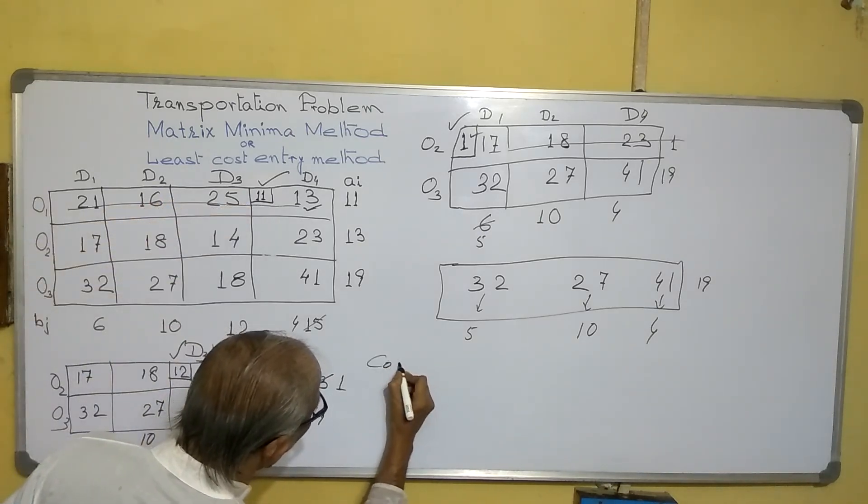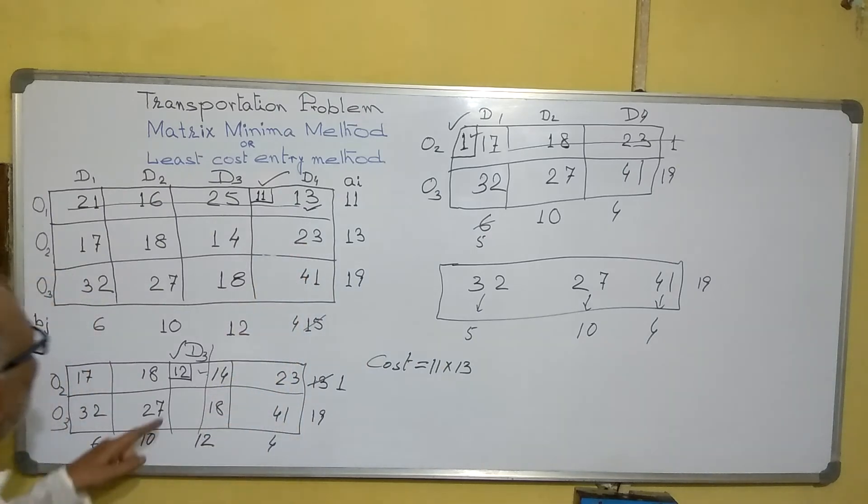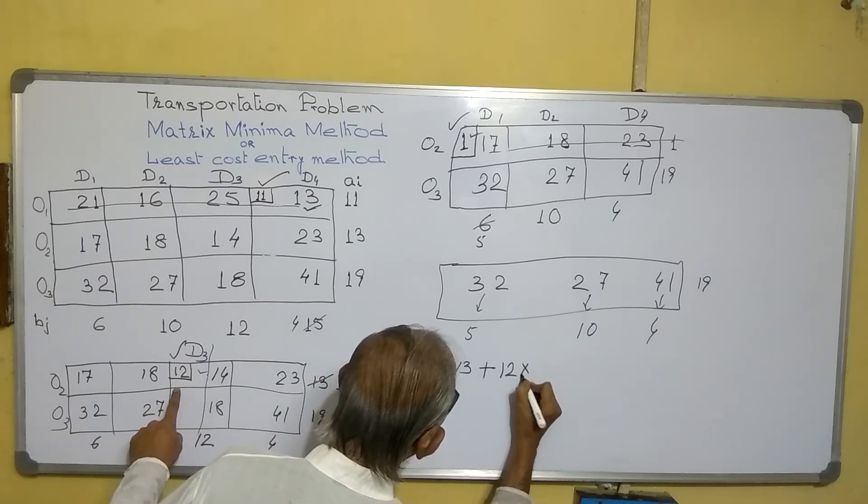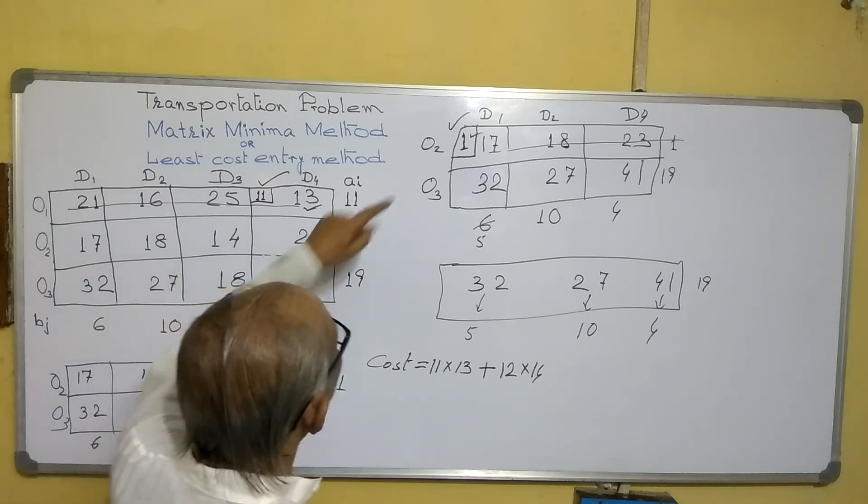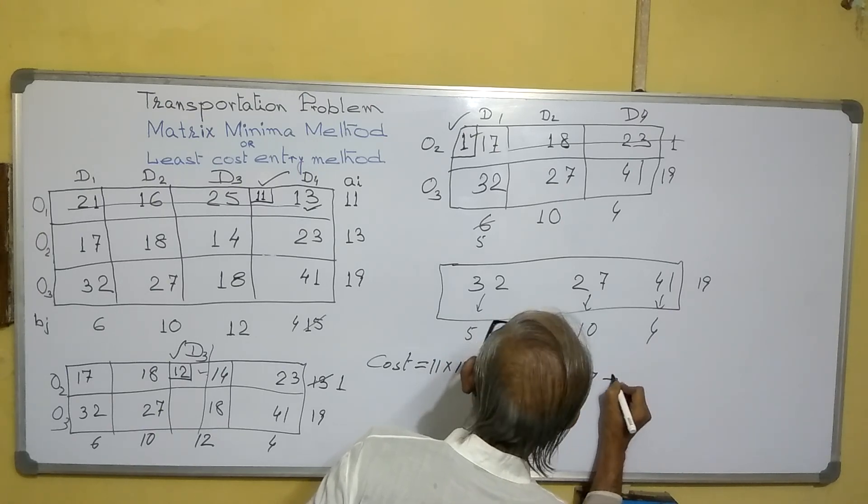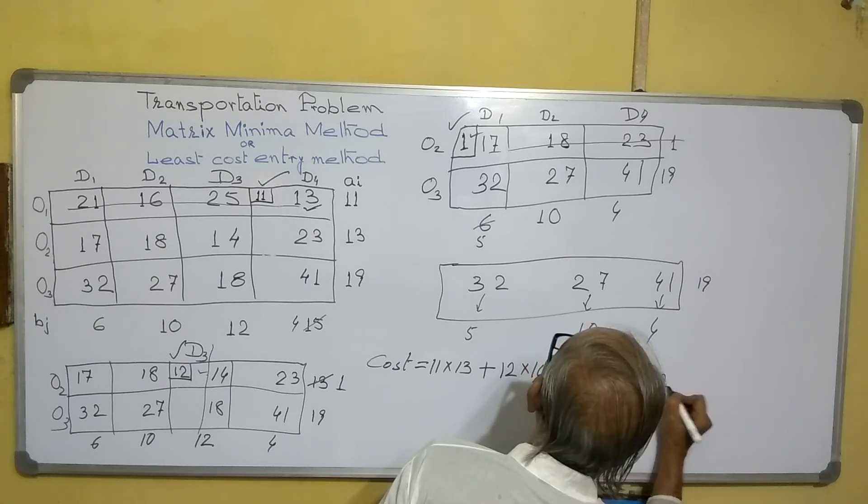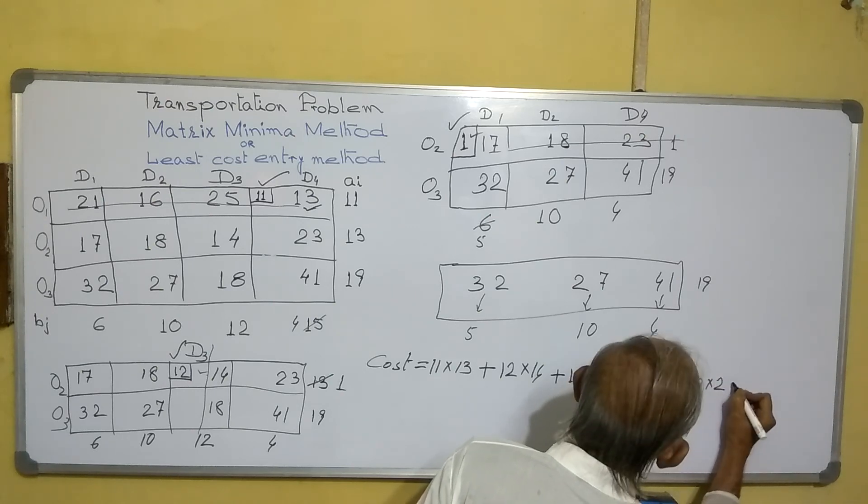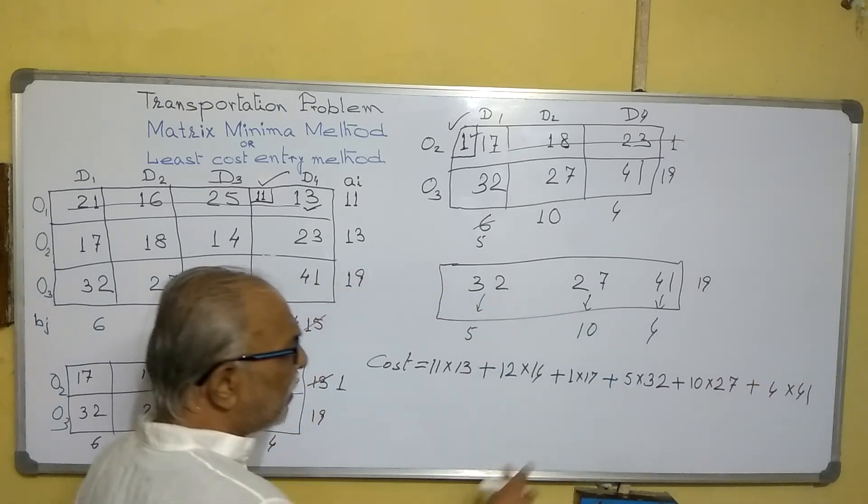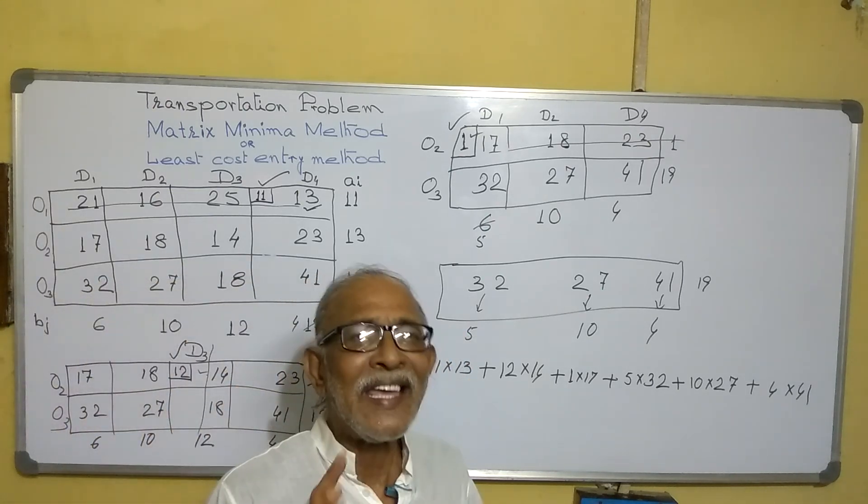Next we supplied here 12, plus 12 into 14 per unit. Next we supplied here 1 into 17 per unit, plus all these things: 5 into 32 plus 10 into 27 plus 4 into 41. I am not calculating. This can be calculated and this is your total cost. This is the distribution. I think I am able to complete this.